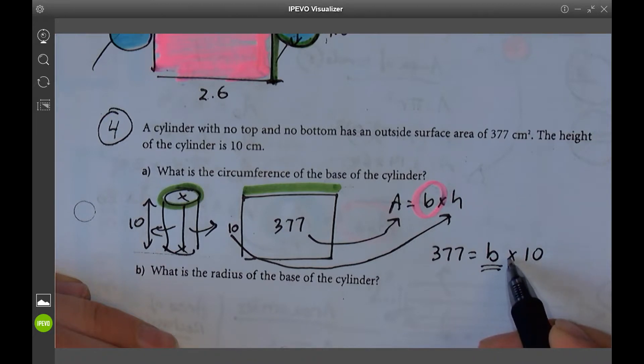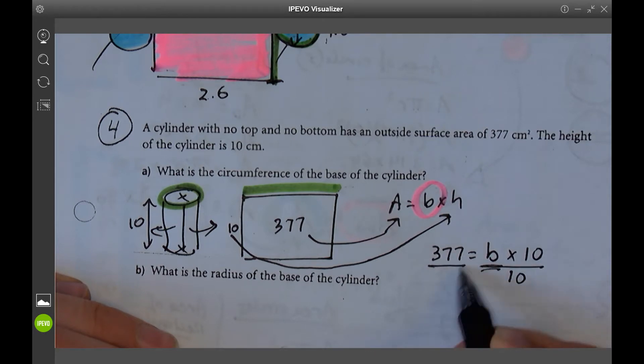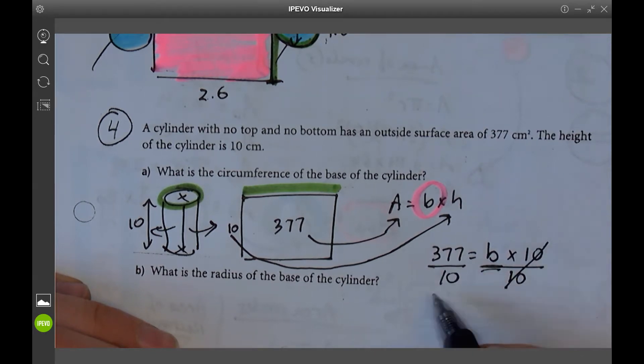What's opposite to multiply? Divide. Divide by 10. Divide by 10. It's going to get rid of that. You will get your answer.